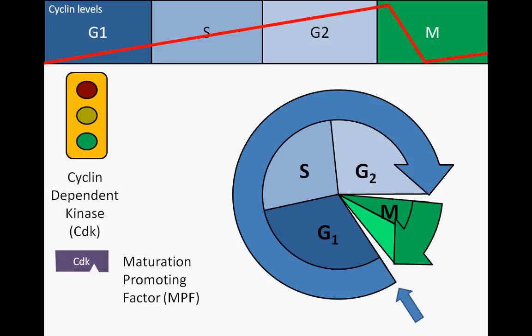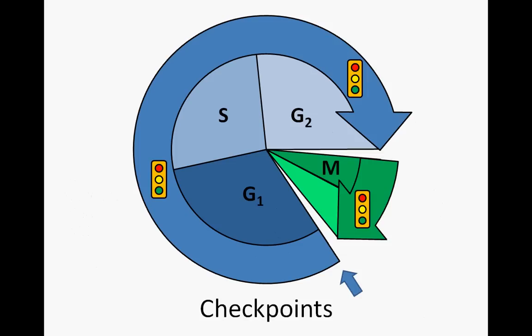Many different cyclin-CDK mechanisms are essential for cell cycle progression, and each of these mechanisms must be overseen by measures to prevent inappropriate advancement. To ensure proliferation of only those cells fit for division, cells rely on three major checkpoints as they progress through the cell division cycle.